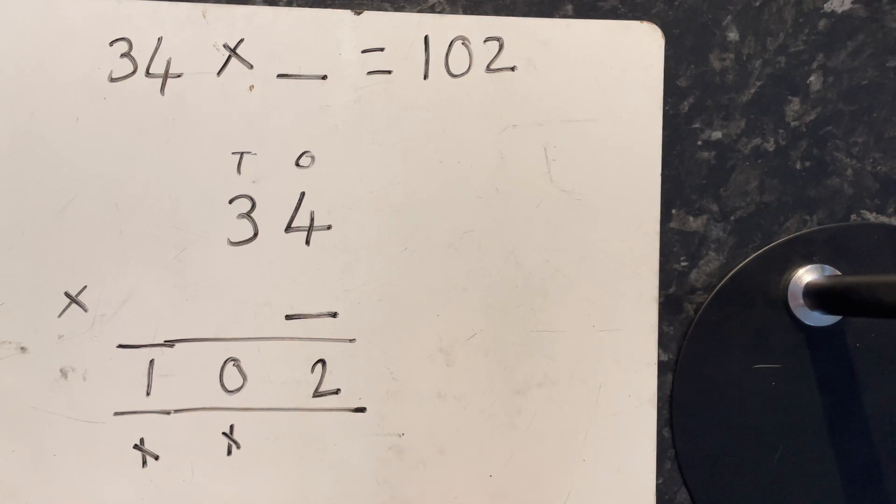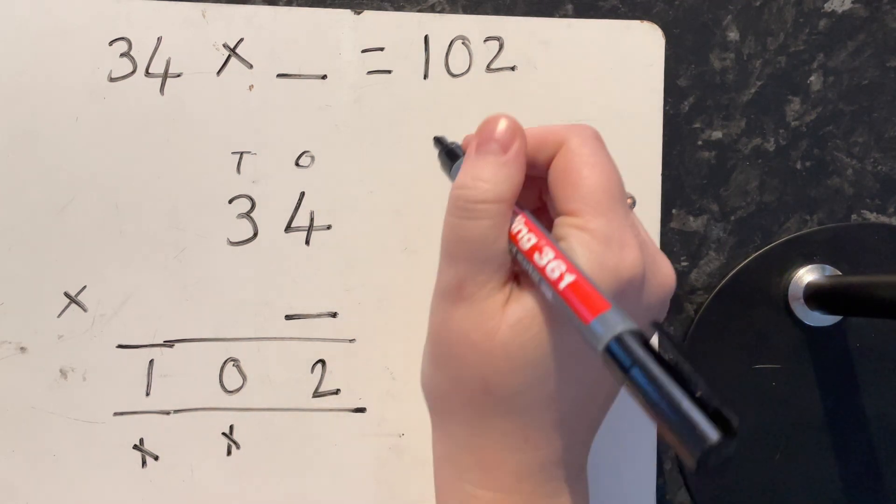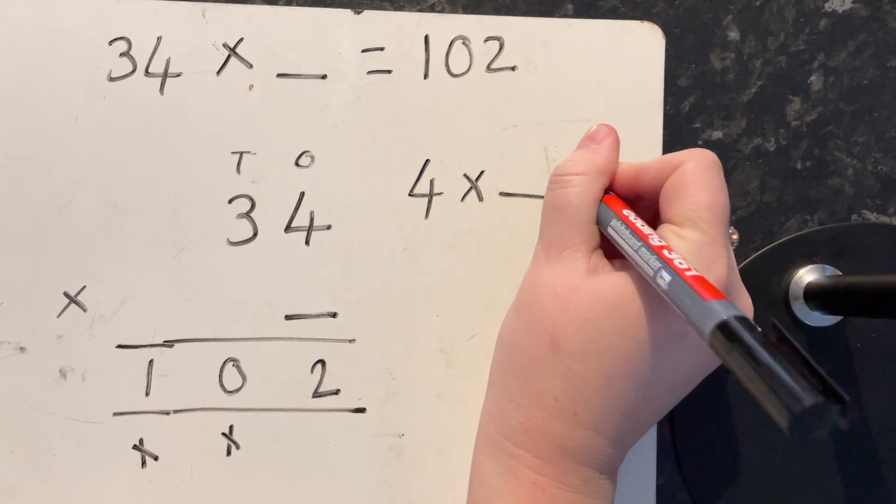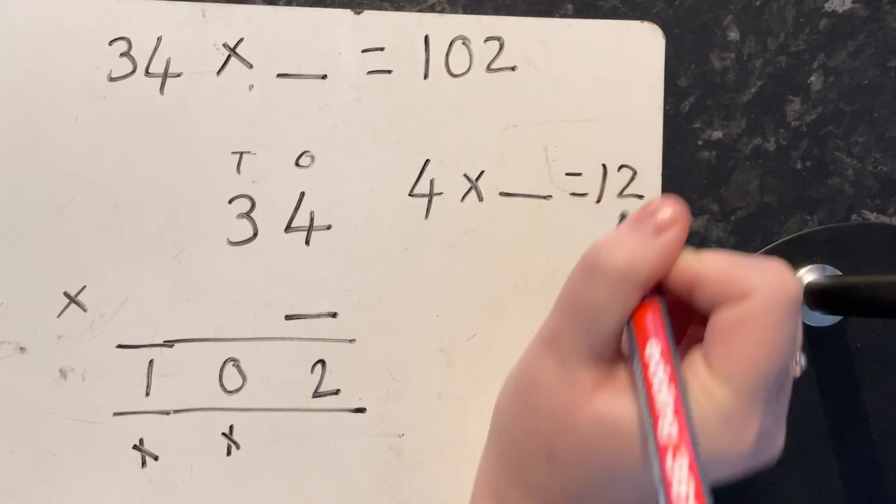So we know that 4 times something gives us 12. We've got 4 times something equals 12.